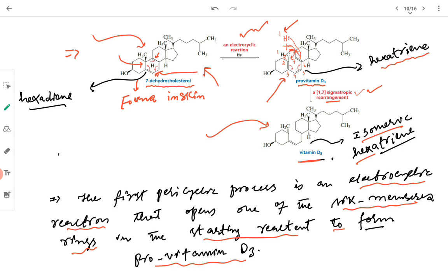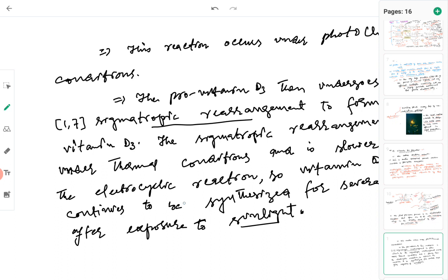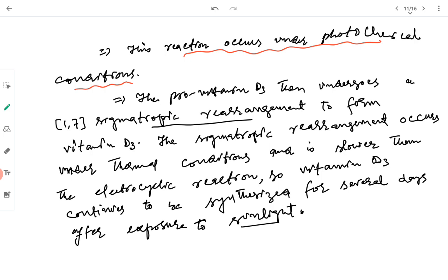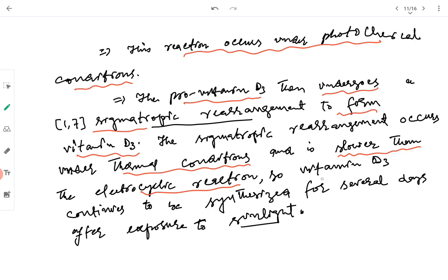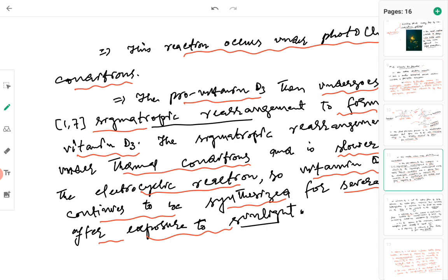Two reactions are involved: one is an electrocyclic reaction, and one is a sigmatropic rearrangement. The electrocyclic reaction — which is the first reaction — occurs under photochemical conditions. The provitamin D3 then undergoes a 1,7 sigmatropic rearrangement to form vitamin D3 under thermal conditions. The sigmatropic rearrangement is a slower process than the electrocyclic reaction, so vitamin D3 continues to be synthesized for several days after exposure to light.